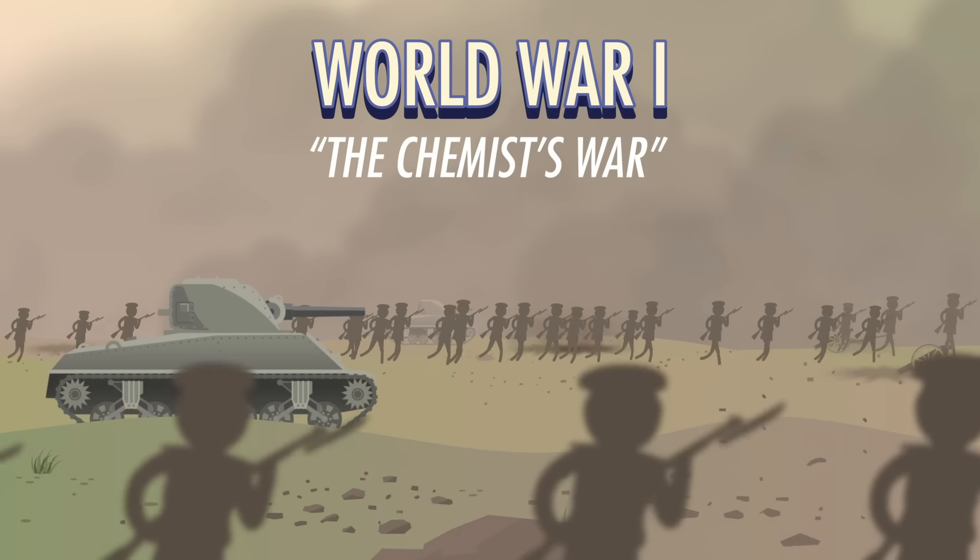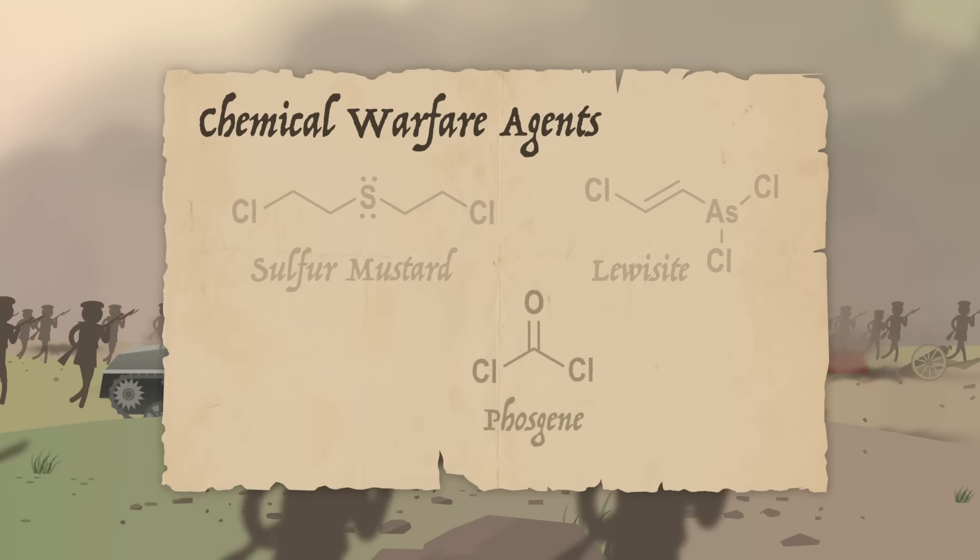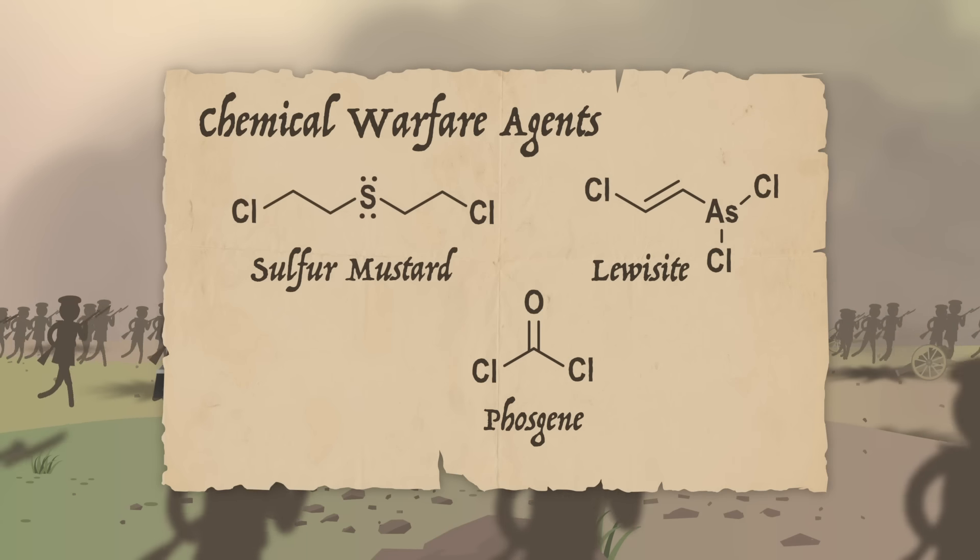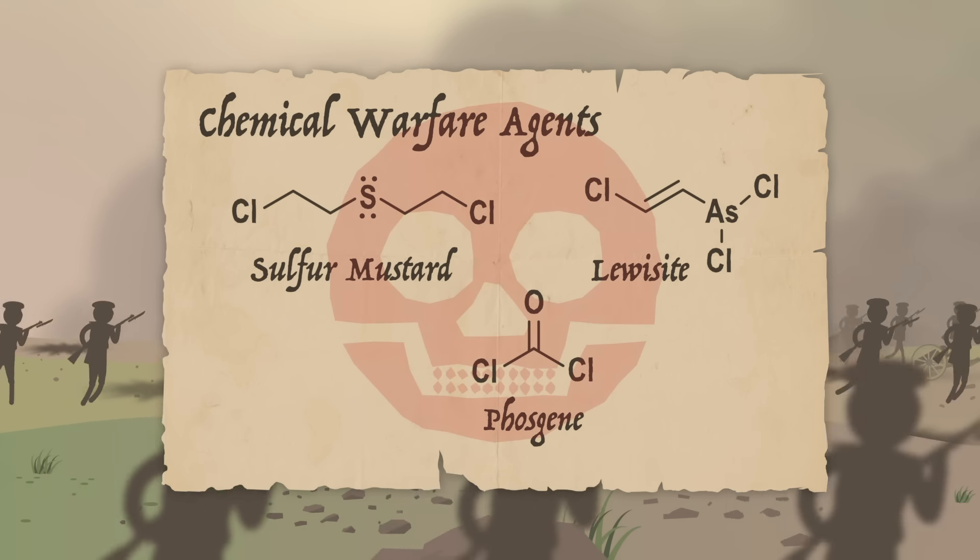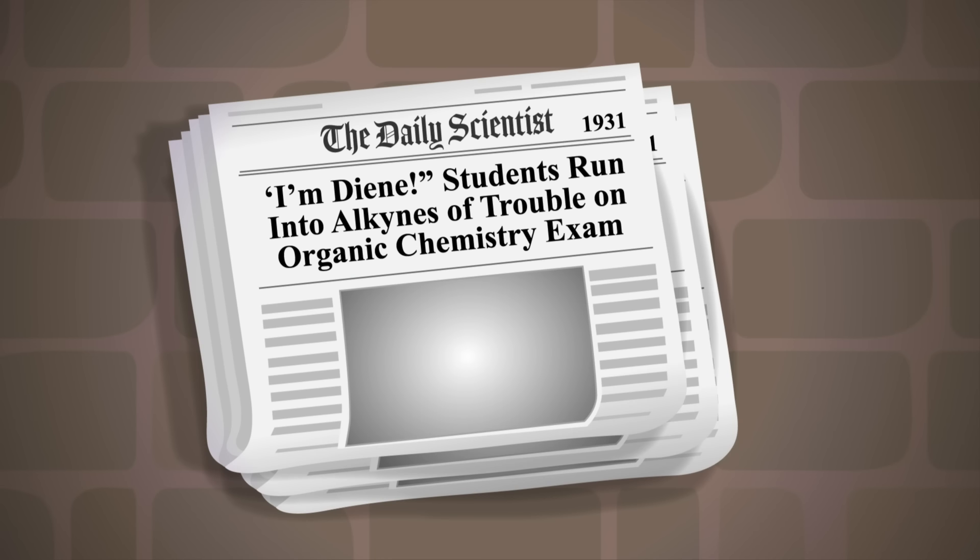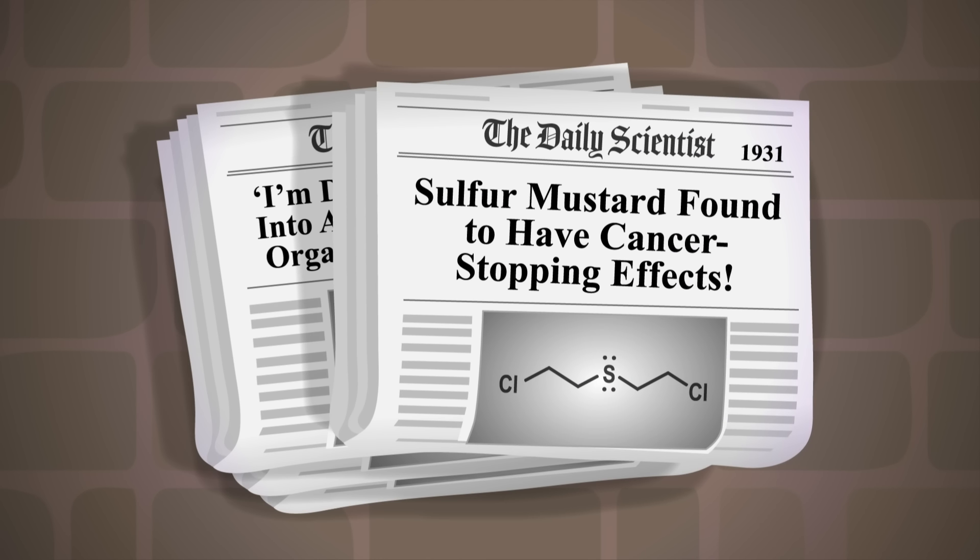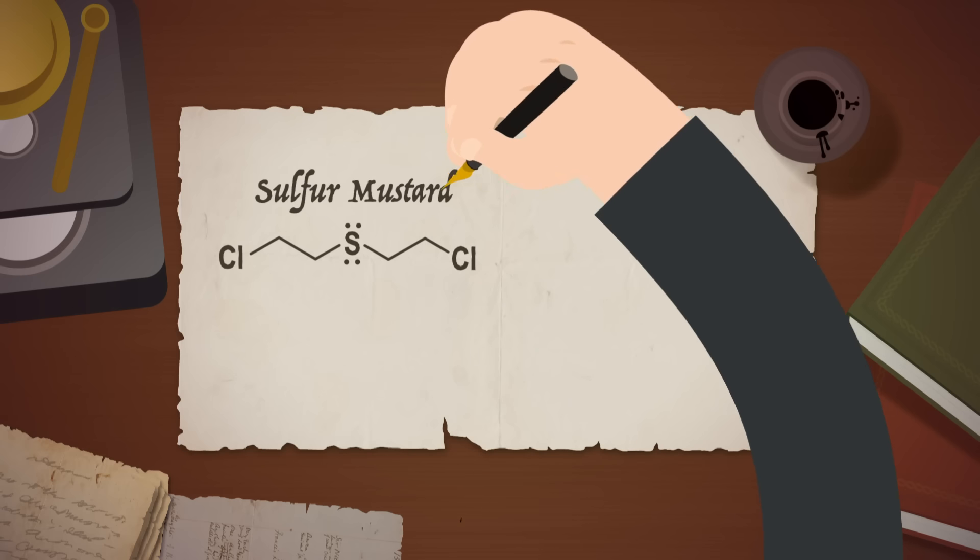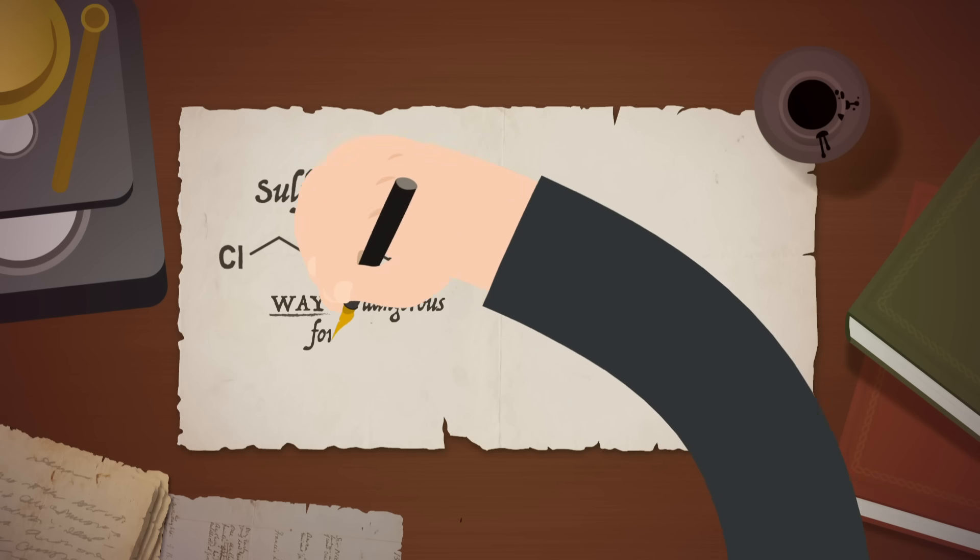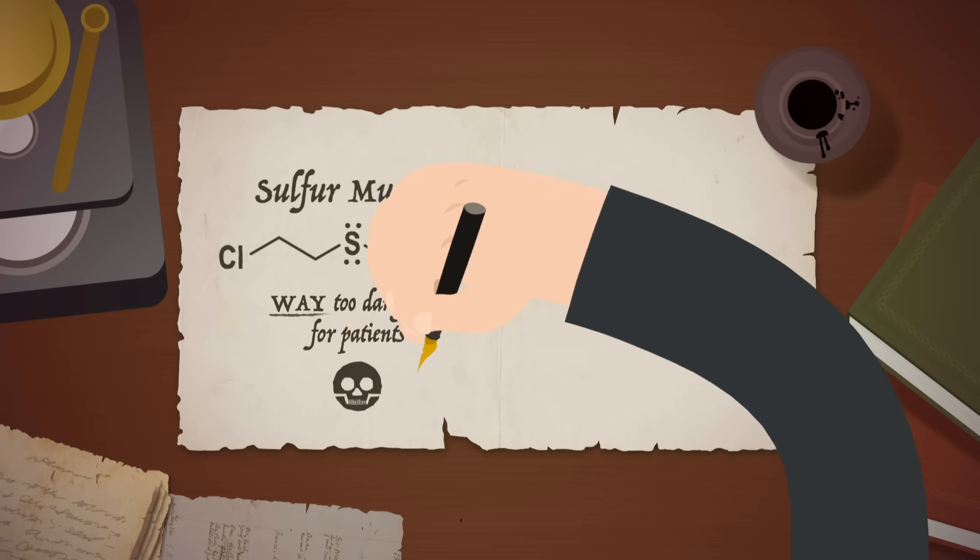World War I has been called the chemist's war because of chemical warfare agents such as phosgene, lewisite, and mustard gas. As bad reputations go, this was pretty horrific. After World War I, a paper published in 1931 described an unexpected benefit of sulfur mustard: anti-carcinogenic or cancer-stopping effects.